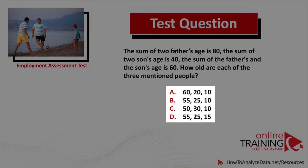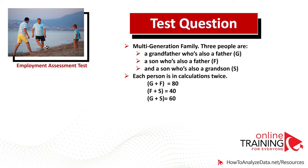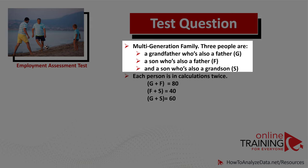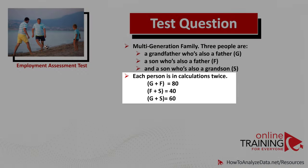Let's see if we can get to the correct answer together. We have a multi-generation family. The three people are: a grandfather who is also a father (G), a son who is also a father (F), and a son who is also a grandson (S). A key consideration is that each person appears in the calculations twice, which means if we add up all pairs we get twice the sum of all ages.